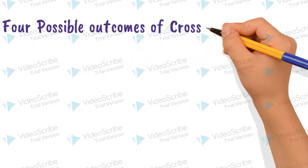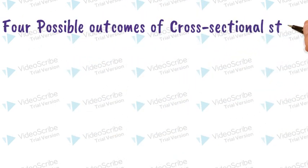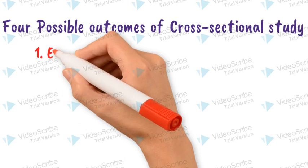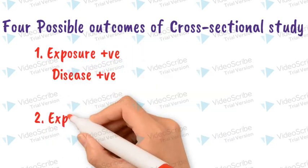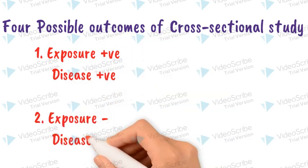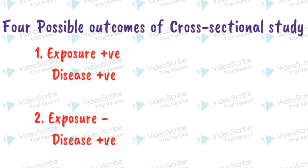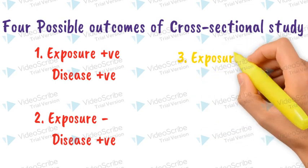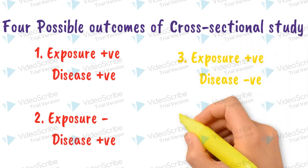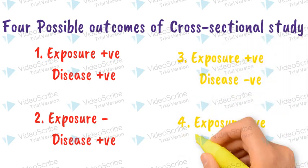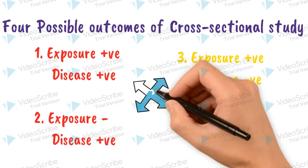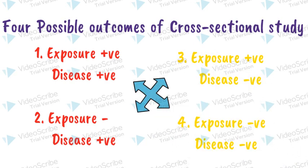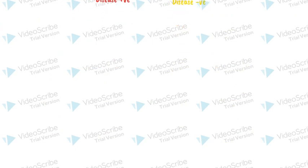There are four possible outcomes in a cross-sectional study: first, exposure positive and disease positive; second, exposure negative and disease positive; third, exposure positive but disease negative; and last, exposure negative and disease negative. Each subject can be categorized into one of these four possible outcomes.